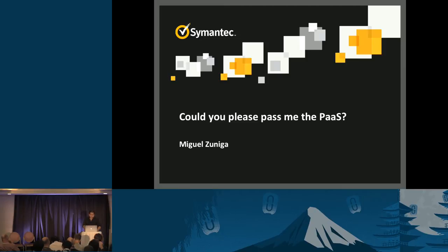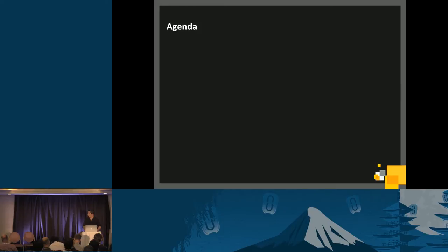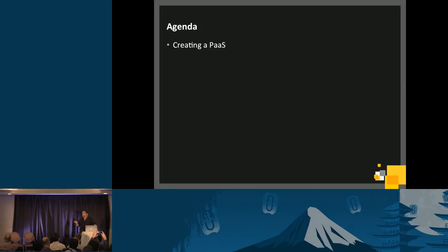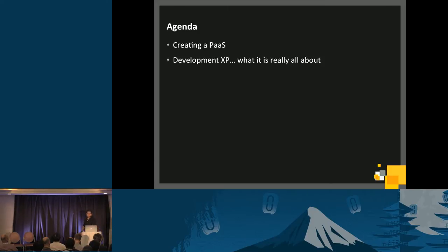Let's jump into a quick agenda. First, it's going to be creating the PaaS — we're going to go through what we need, which requirements we were looking for, and what our main goal is on creating a PaaS. You'll see it's a little bit more focused on other types of users, not the usual standard IT guys. Then we'll go into why we did it — the developer experience, which is the whole deal of the PaaS.